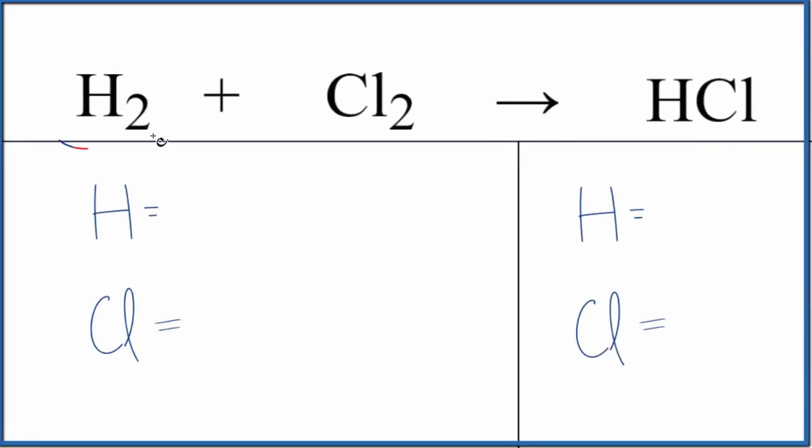Let's balance the chemical equation H2 plus Cl2 gives us HCl. So we'd have hydrogen gas, chlorine gas, and the HCl that would be hydrogen chloride that would be a gas at least initially.